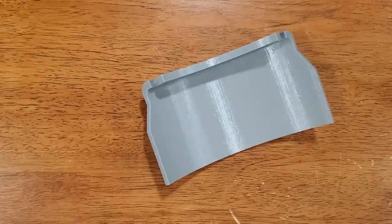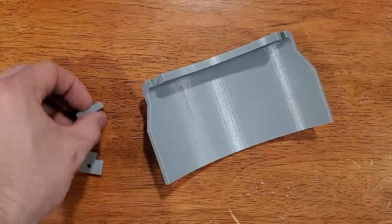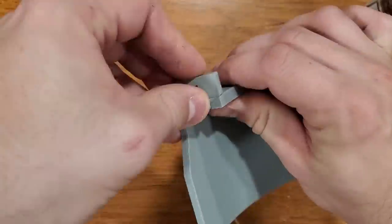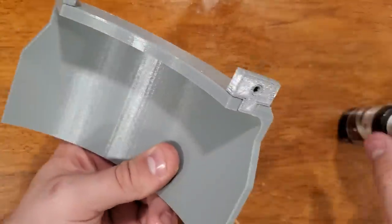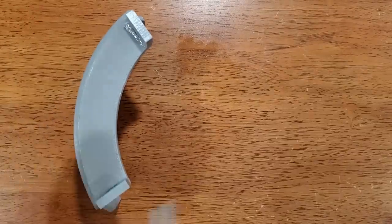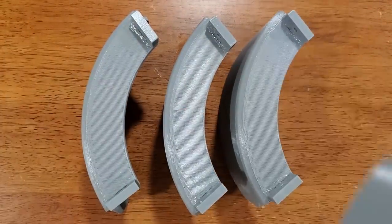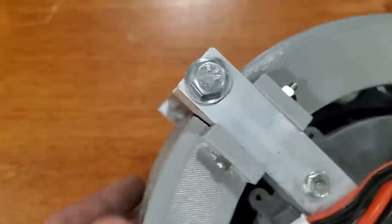The last piece of the structure is the shields that will go around the wheel. These will allow me to handle the gyro while it's spinning without getting my fingers torn off. The shields are just screwed onto the hub frame with little tabs on the edges.